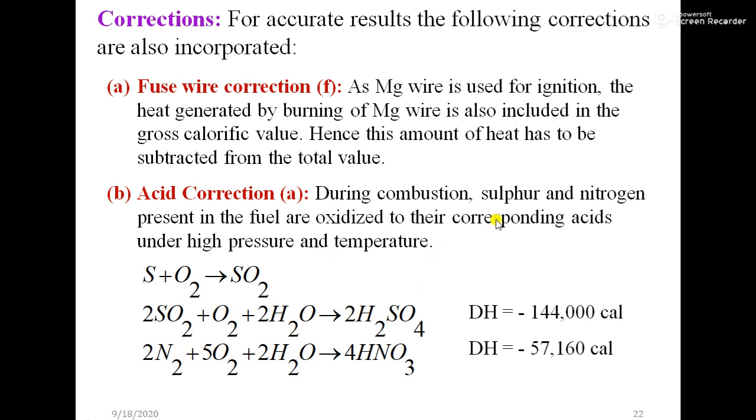During combustion, sulfur and nitrogen present in the fuel are oxidized to their corresponding acids under high pressure and temperature. That part of heat is added to the total value of the GCV and that should be subtracted. That is acid correction.